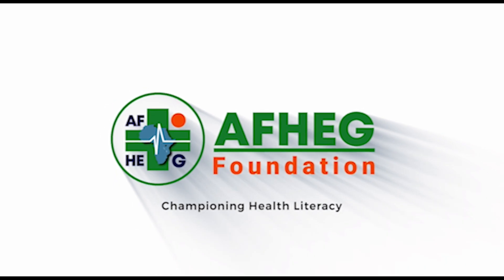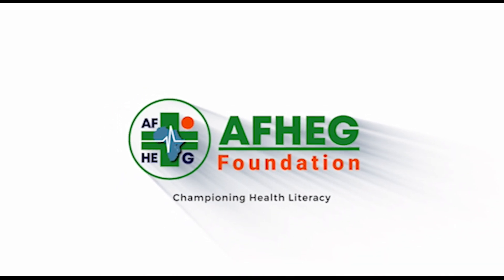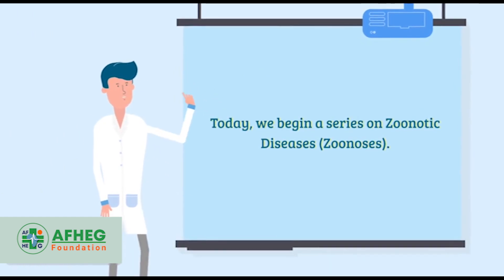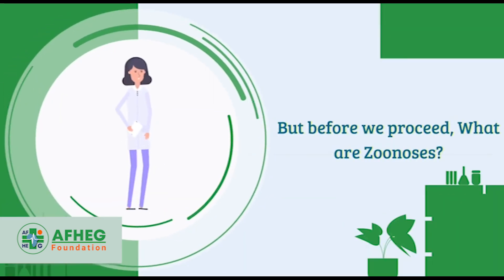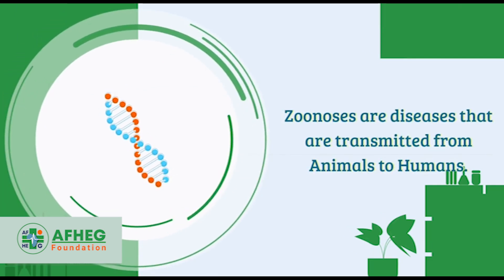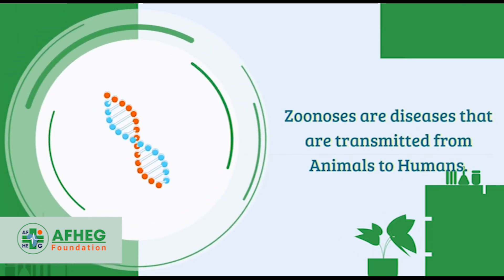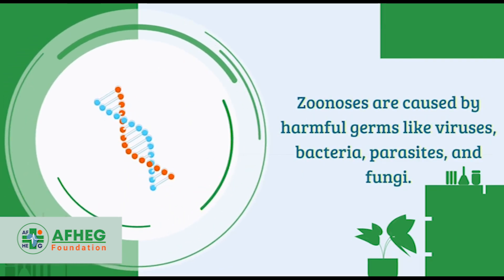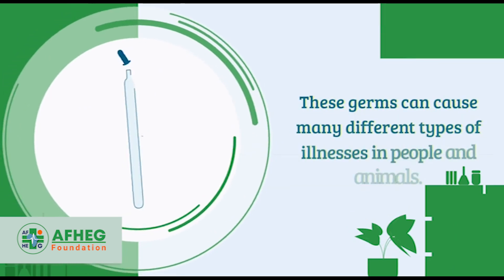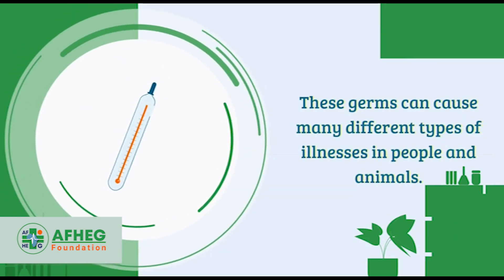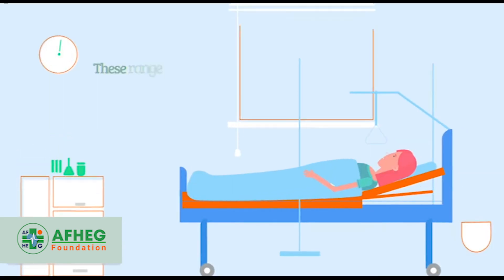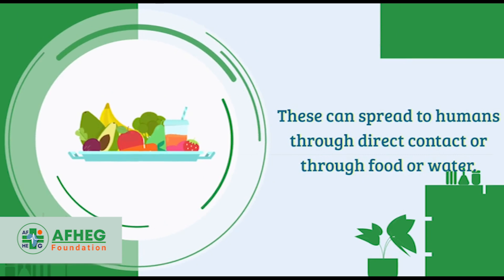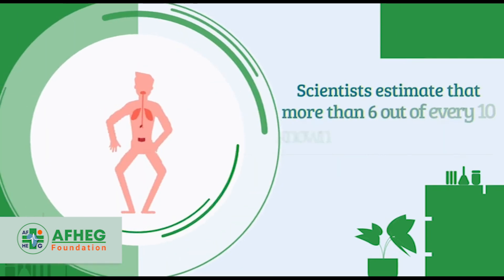AFHEG Foundation, championing health literacy. Today we begin a series on zoonotic diseases — zoonoses. Zoonoses are diseases that are transmitted from animals to humans. They are caused by harmful germs like viruses, bacteria, parasites, and fungi, which can cause many different types of illnesses in people and animals, ranging from mild to serious illness and even death.